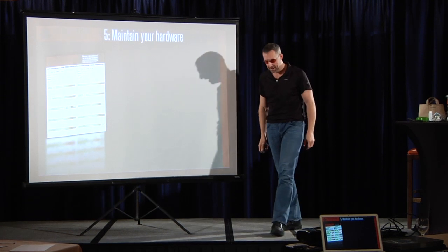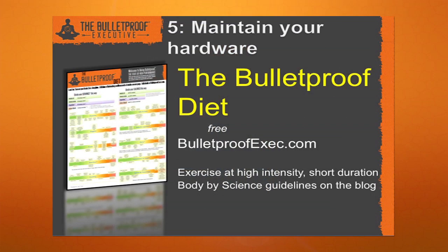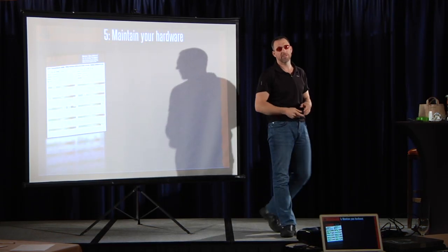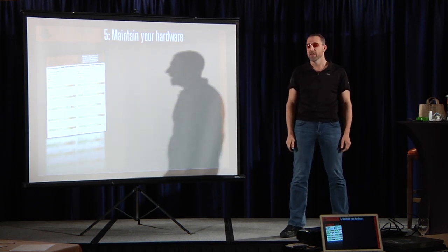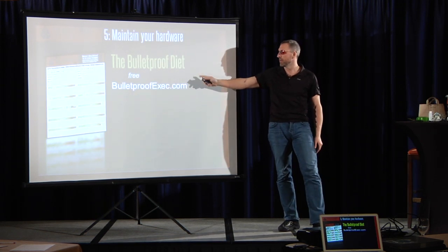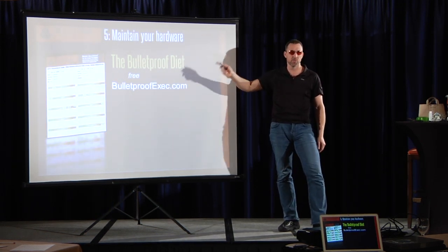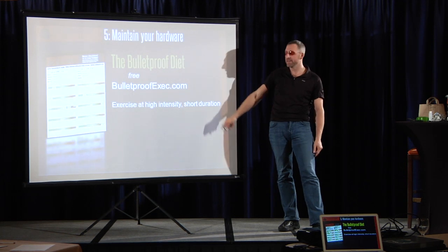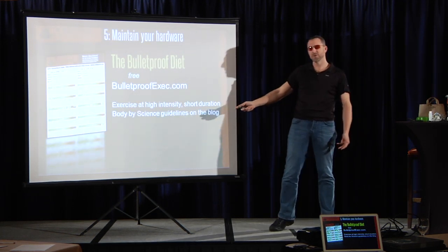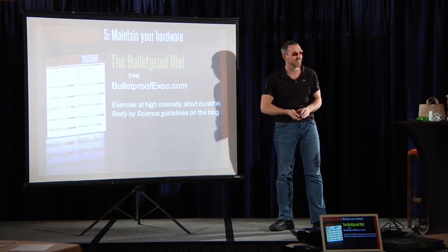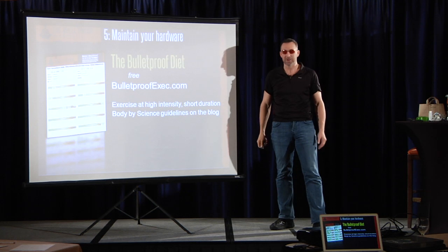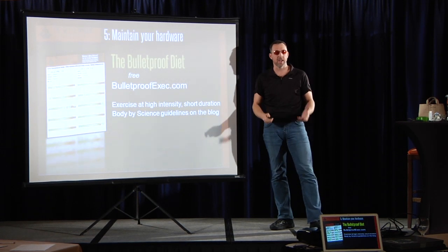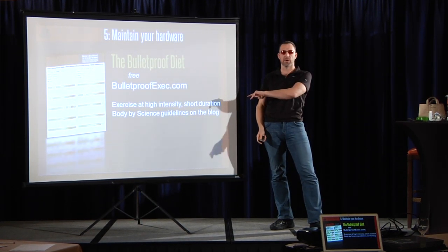Maintain your hardware. This is a picture of the bulletproof diet. It's an infographic. One page you print out, you put it on your fridge. It's related to paleo. It's derived from biochemistry and biohacking. It's paleo with less toxins. There's no cost. There was six weeks to make the infographic. There's more than a thousand references that went into the research.